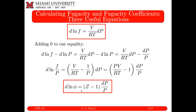To calculate log phi, I integrate both sides. If I integrate the left-hand side from P equals 0 to P, the fugacity coefficient in the ideal gas limit — as P goes to zero — is just 1. This is at constant T. In the limit that P goes to zero at constant T, all fluids approach ideal gas behavior, so the fugacity coefficient is just 1.